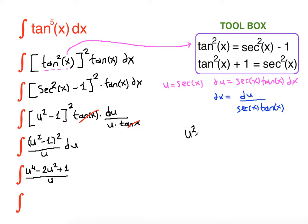You can go ahead and FOIL it like u squared minus 1 times u squared minus 1, or you can use the formula a minus b squared equals a squared minus 2 times ab plus b squared. Here we have three terms on top and u as the common denominator. So we can separate it.